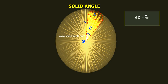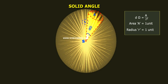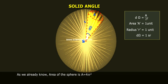Let us assume area A is equal to one unit and radius r is equal to one unit. Thus d omega is equal to one steradian. As we already know, the area of the sphere is A equals 4 pi r square, as the radius is r.